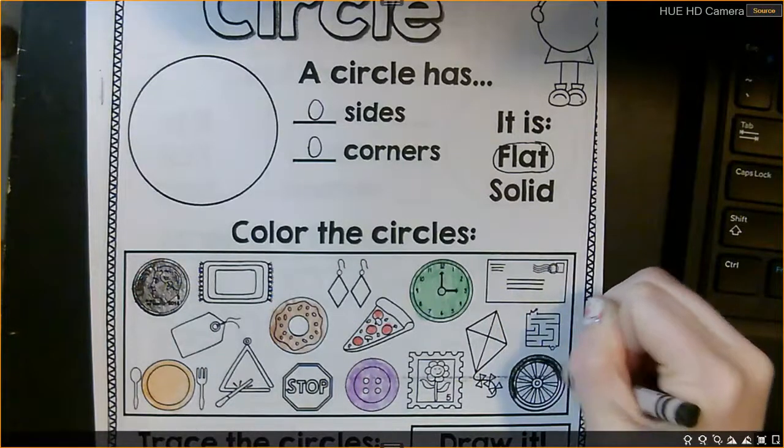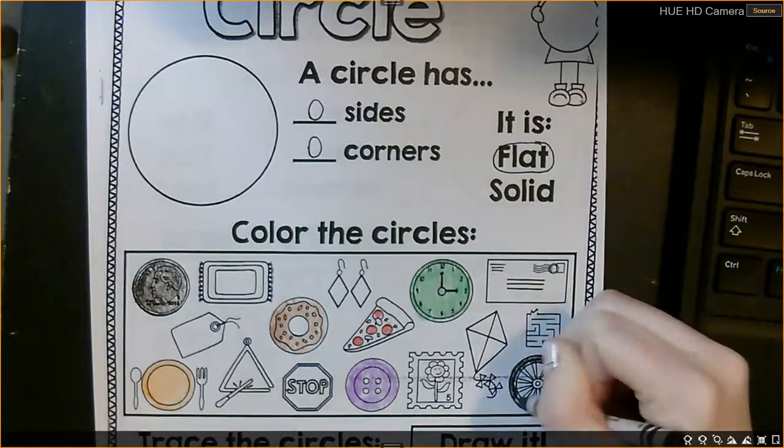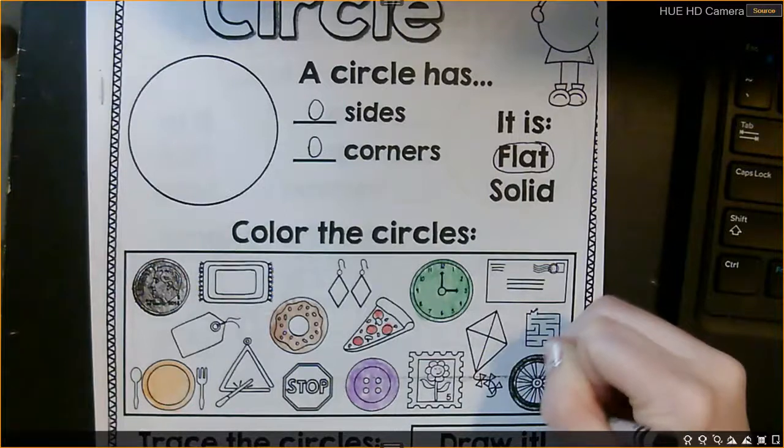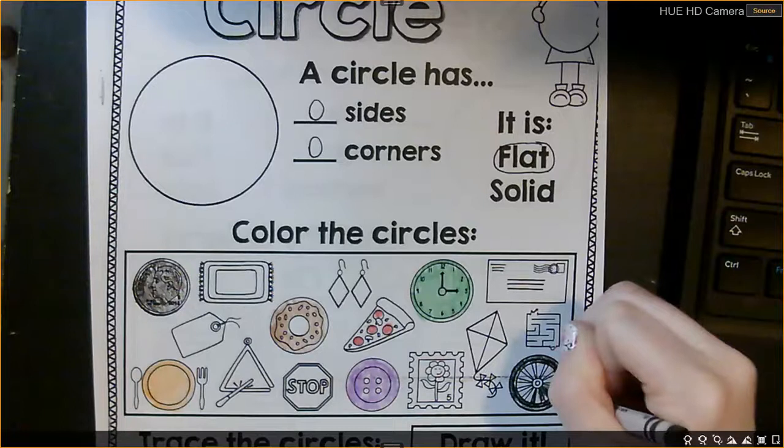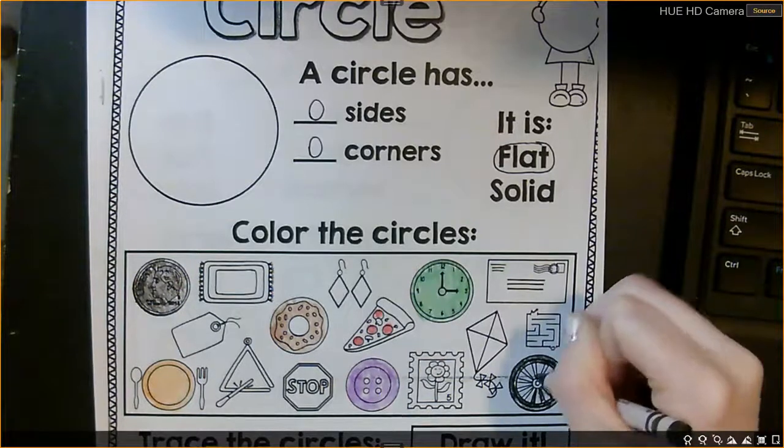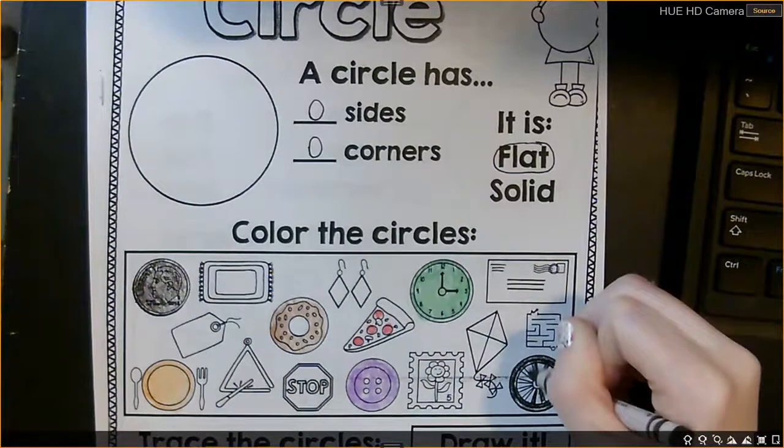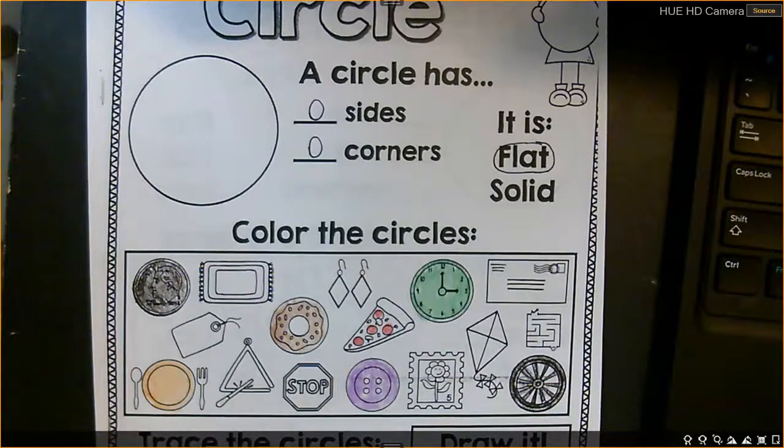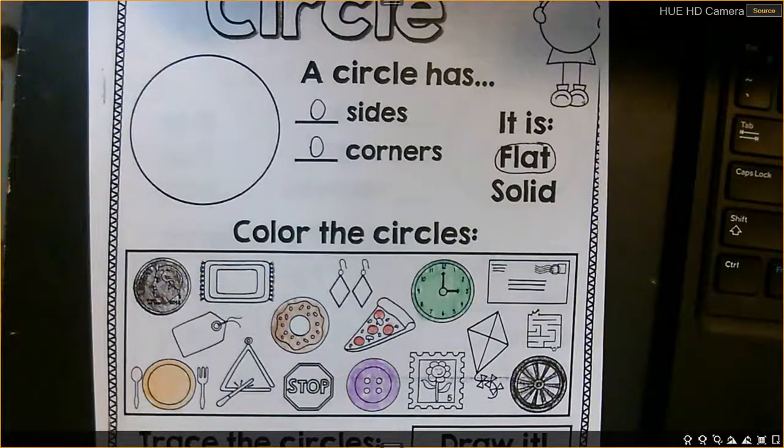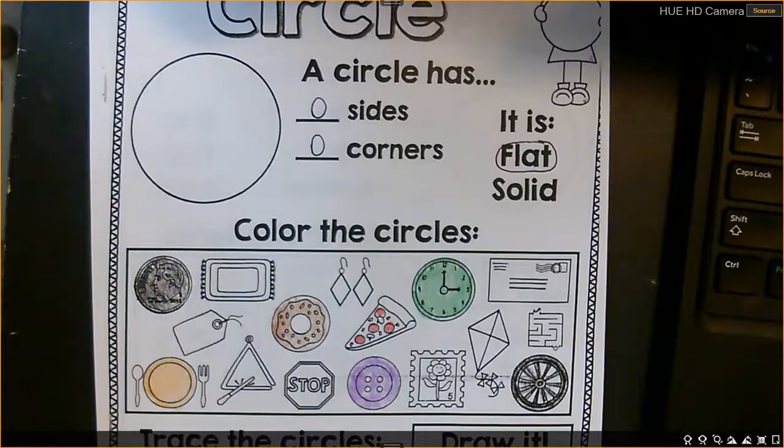And I like how you are doing quality work and you are coloring very nicely in the lines. We don't want scribbles. All right. So we have 1, 2, 3, 4, 5, 6, 7 circles.